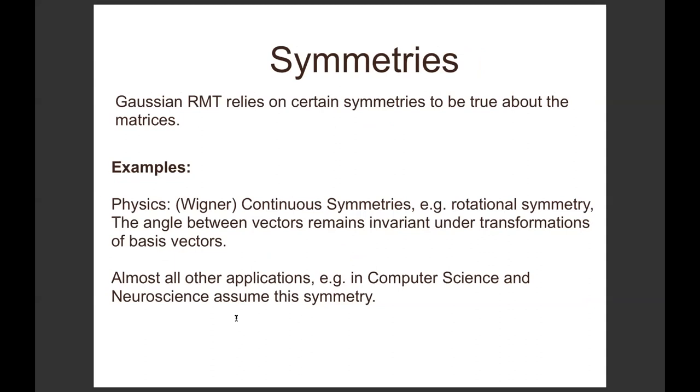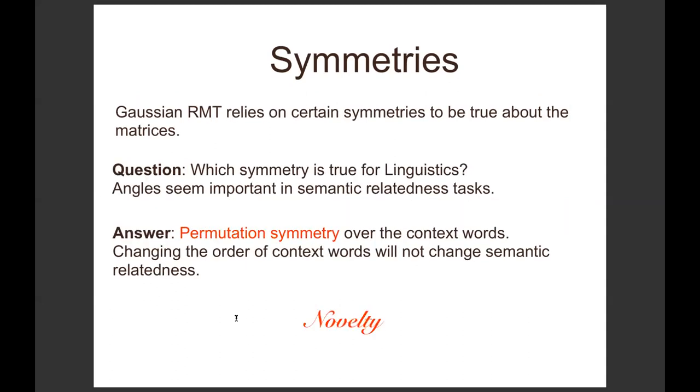Random matrix theory, from its origins, relies on certain symmetries to be true about them. The major symmetry that has been true is continuous symmetry. It's been true for physics and in most applications we know this is also the symmetry that holds. But for linguistic purposes, we should ask: do we really have continuous symmetry here? First of all, the matrices aren't symmetric and they're not Hermitian, and there's no reason that they should be invariant under rotation.